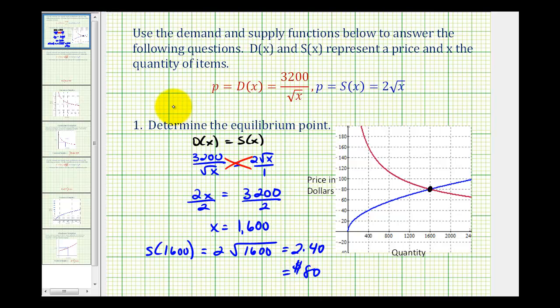So the equilibrium point would be where the quantity is 1,600 and the price is $80 per unit. In the next video, we'll determine the consumer surplus and producer surplus for the same situation.